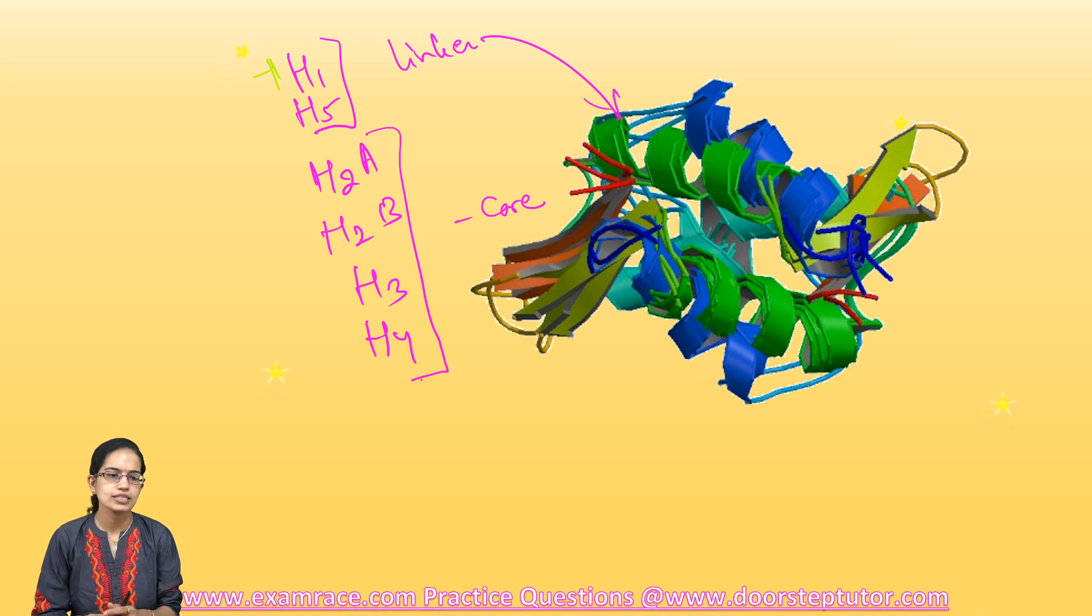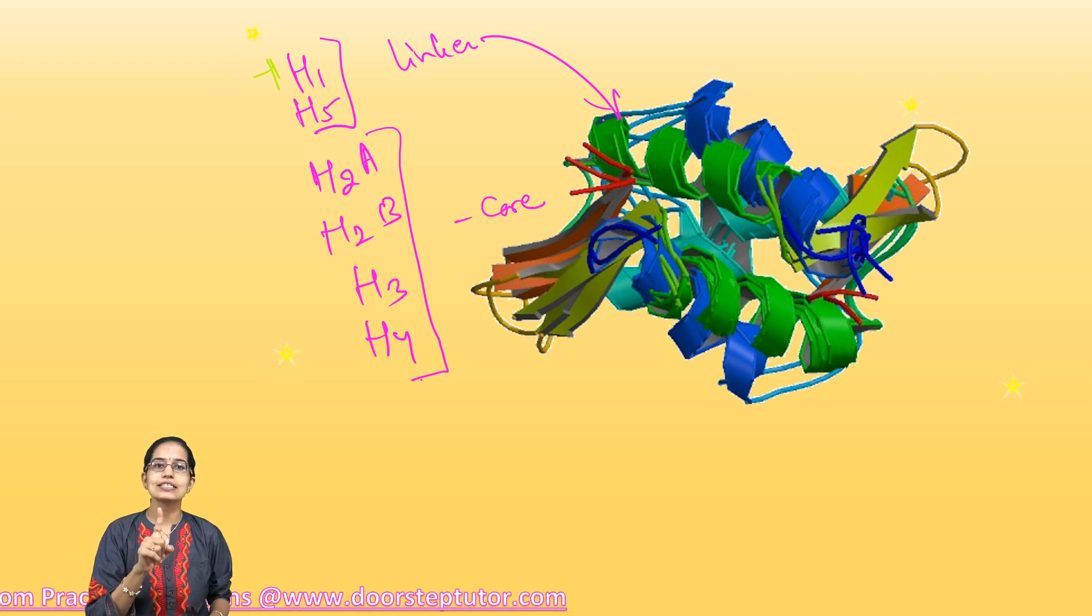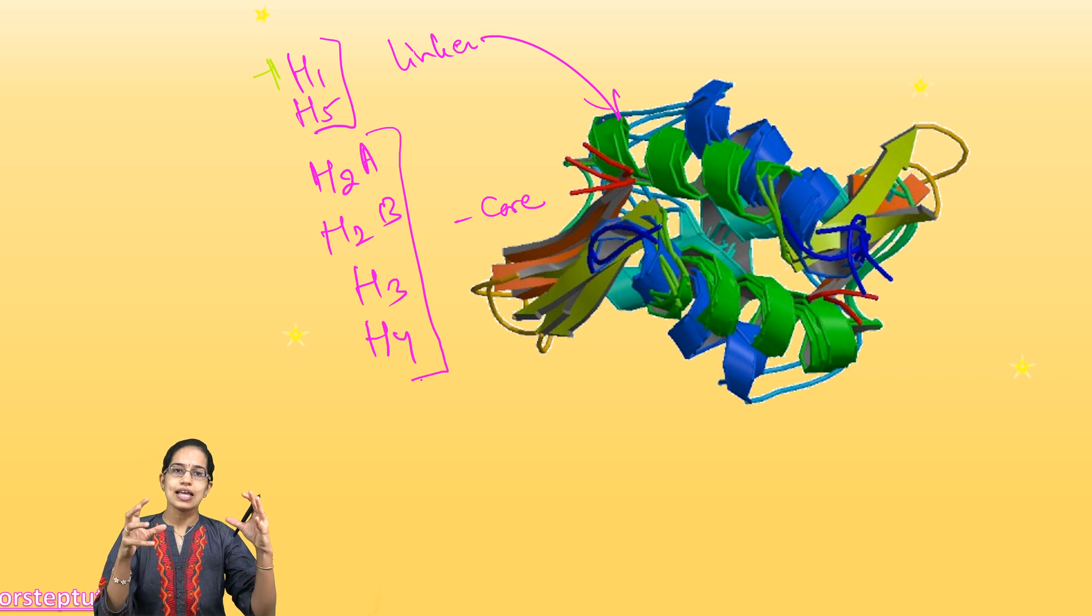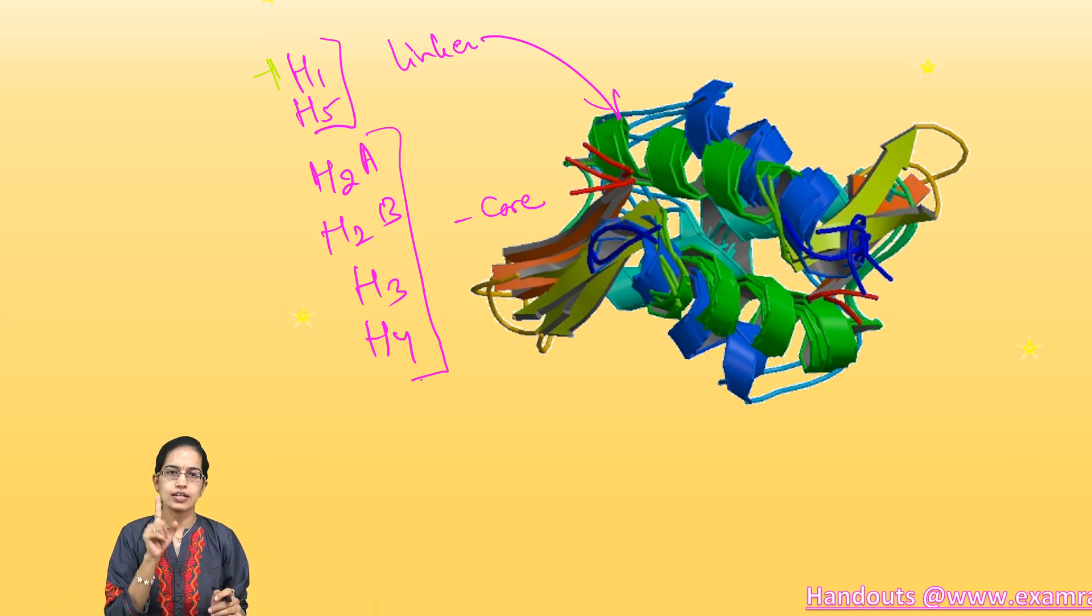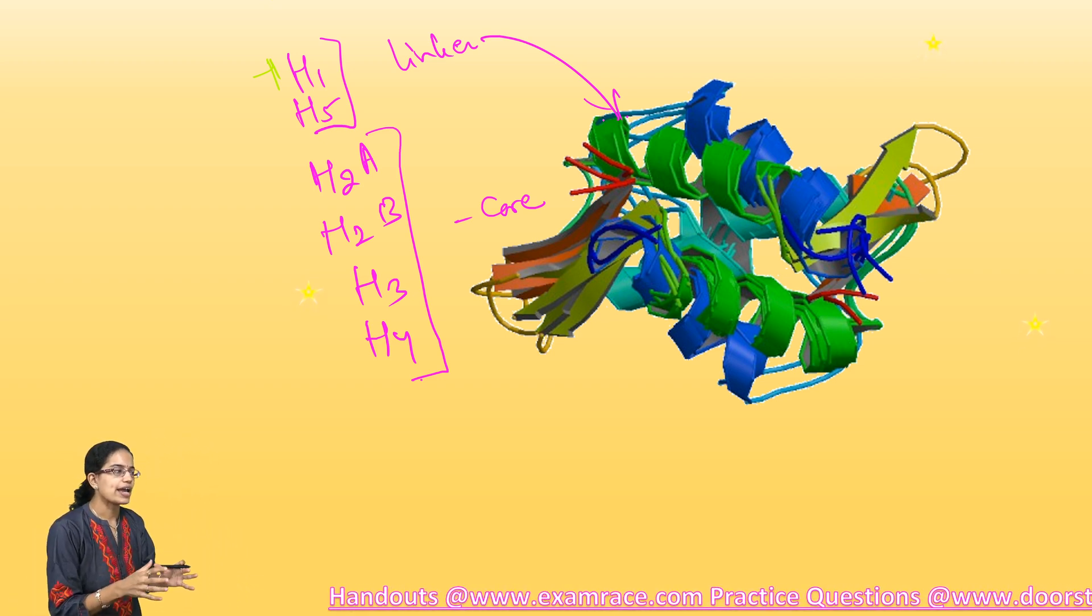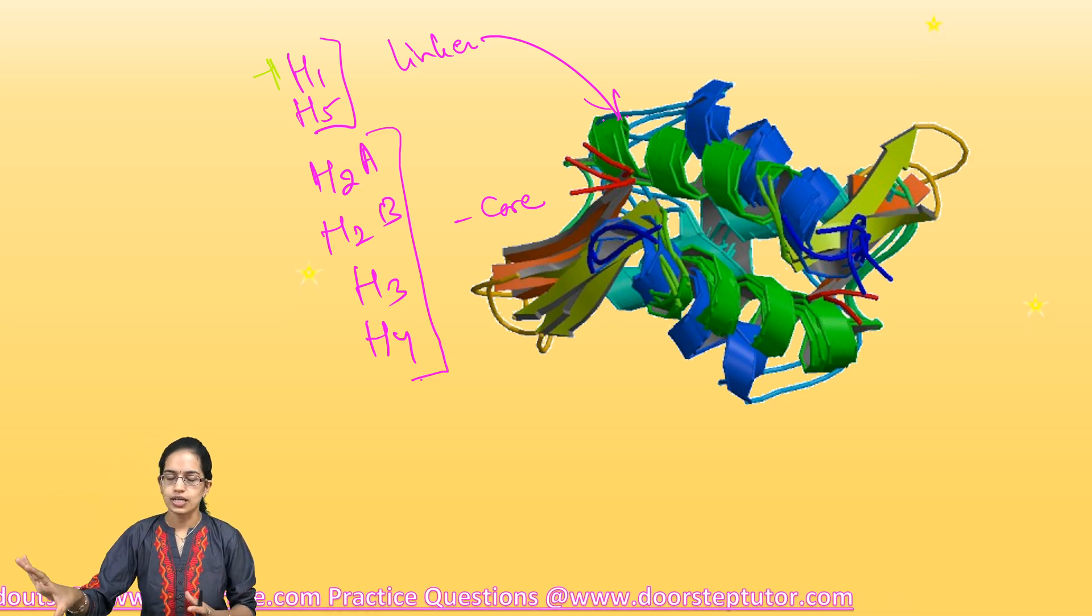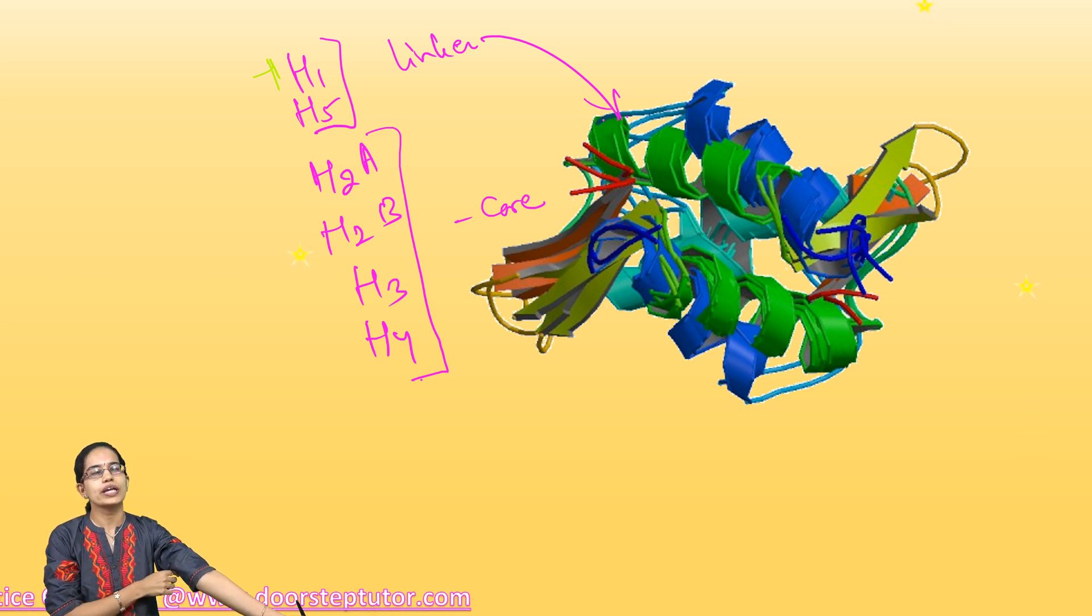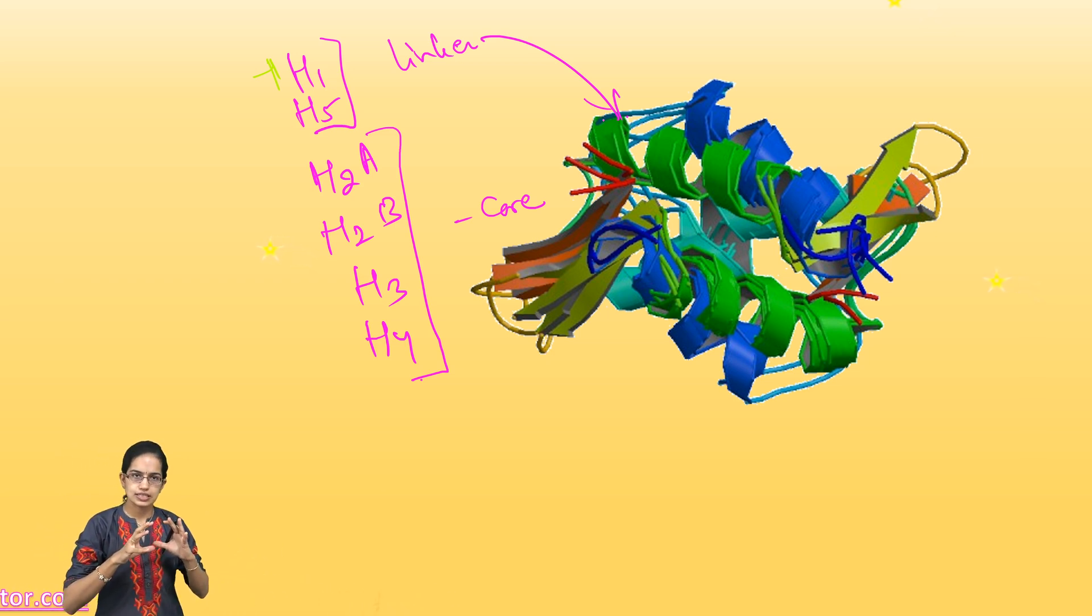The core histones always exist in dimer, that is they do not exist as single histone or single protein, they exist as two. So they are therefore called as dimer. If it exists as one it is monomer. Now understanding why these H1 and H5 are different from the others. H1 and H5 basically, when we talk about any of the core histones, you have these histones which are existing as dimer.